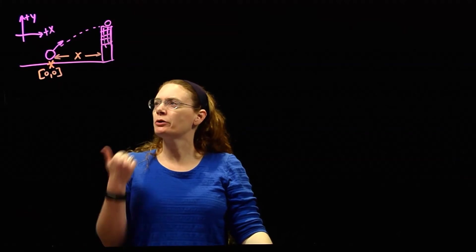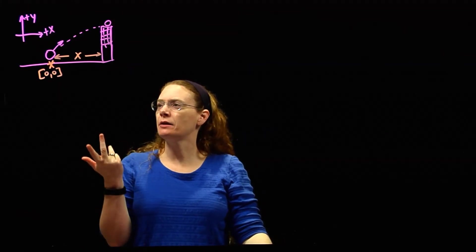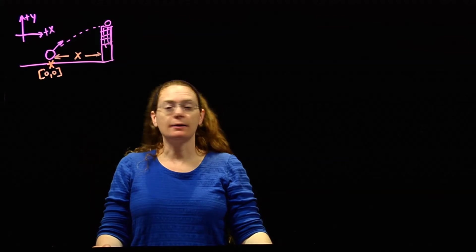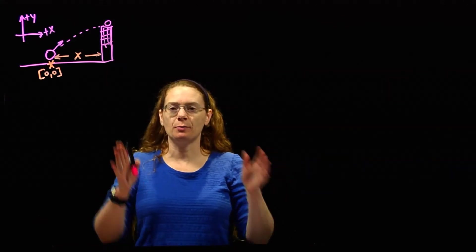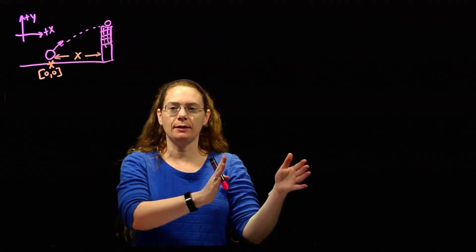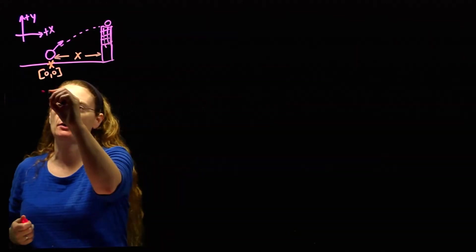Let's do our chart of unknowns. Two-dimensional motion. We need two different charts because the horizontal and the vertical need separate charts. They are independent of each other.